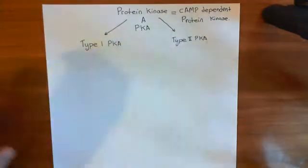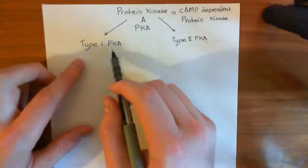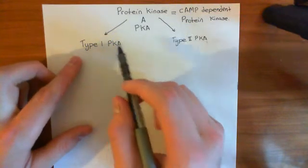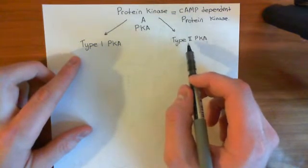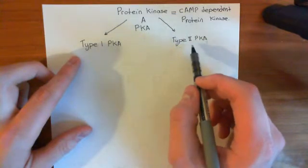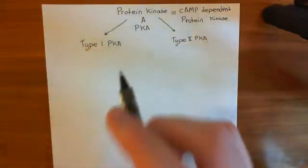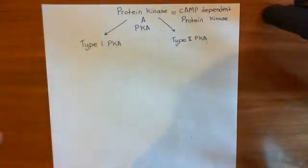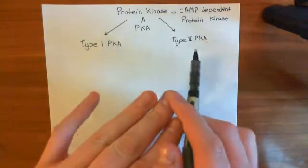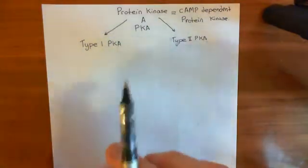You have these two types, type 1 and type 2 PKA. What is the difference between these two? Well, type 1 PKA is free within the cytoplasm of the cell, whereas type 2 PKA is anchored to the membrane by proteins known as A-kinase anchoring proteins, which we'll talk about later. Let's begin with the structure of both of these, and then we'll discuss how type 1 is soluble and type 2 is attached to the membrane, and look at the different targets of each.